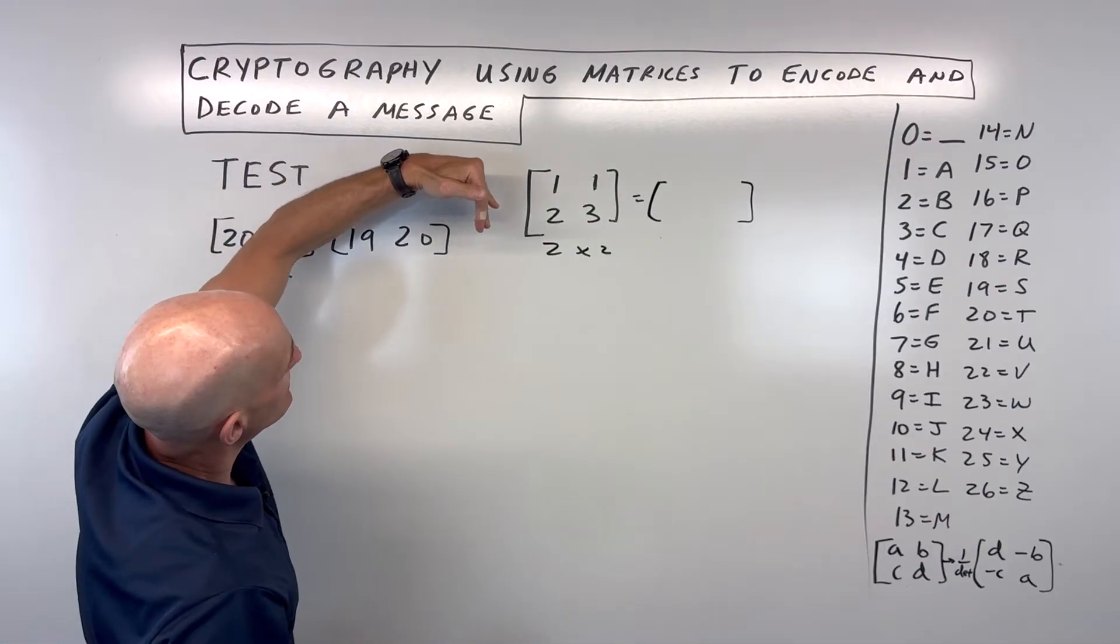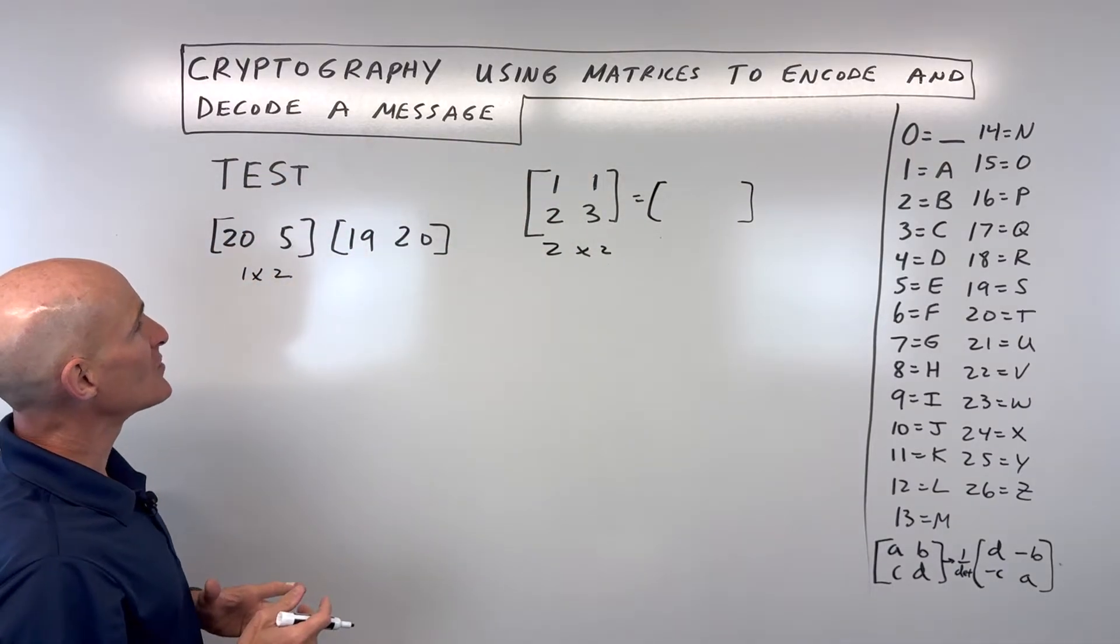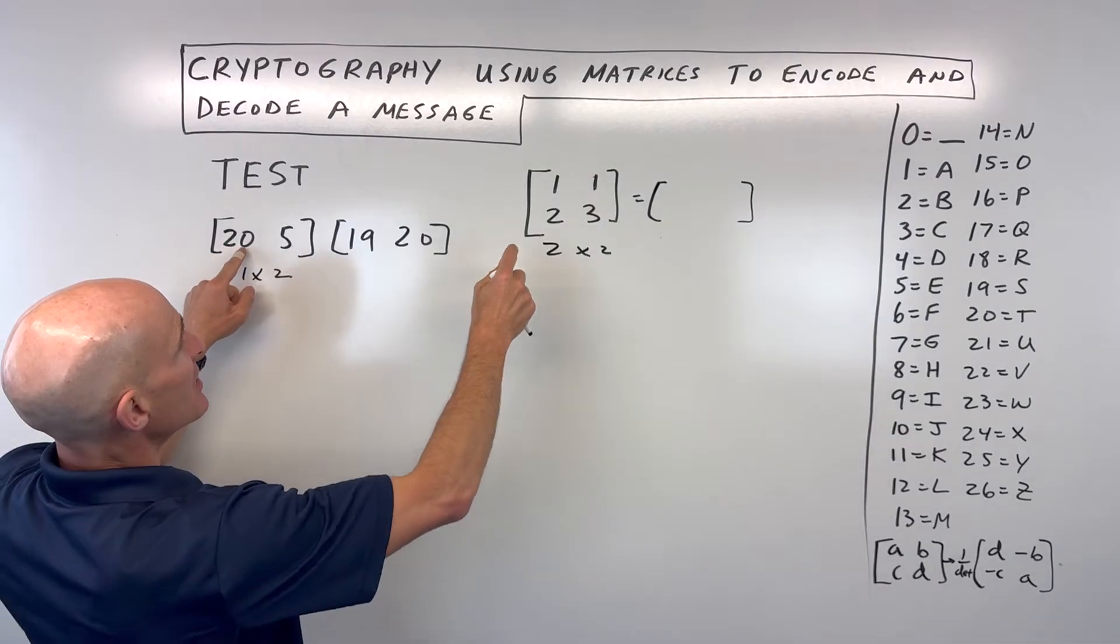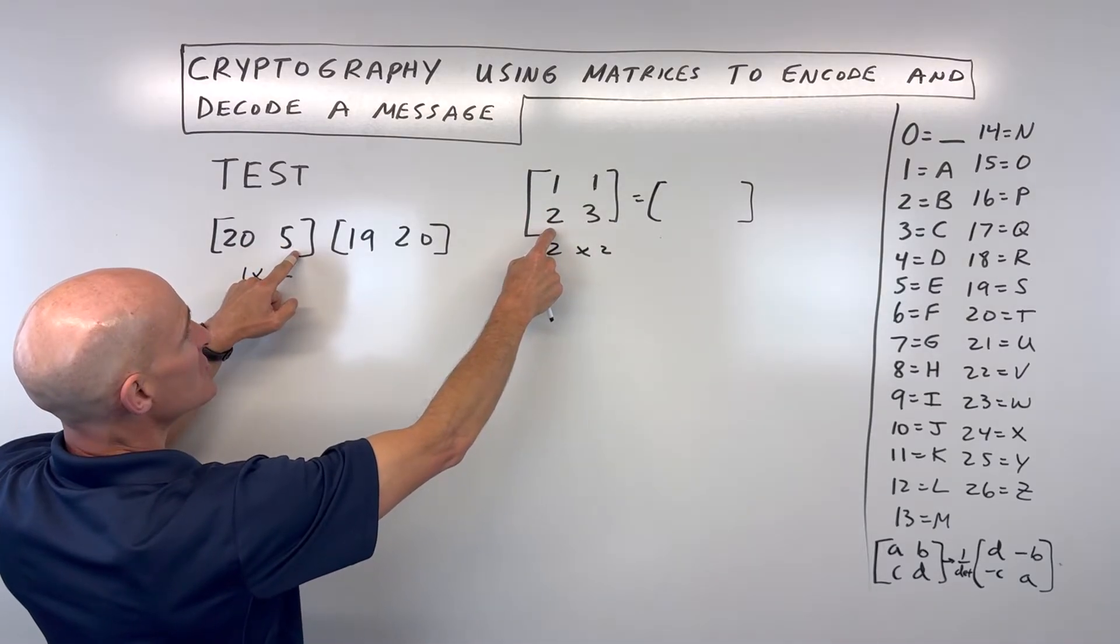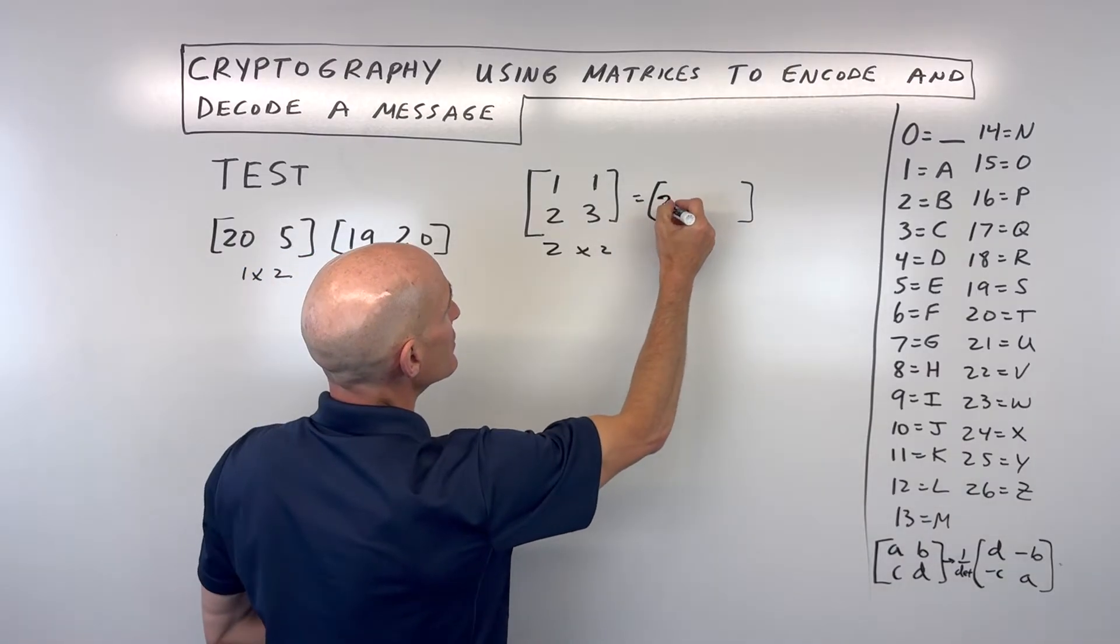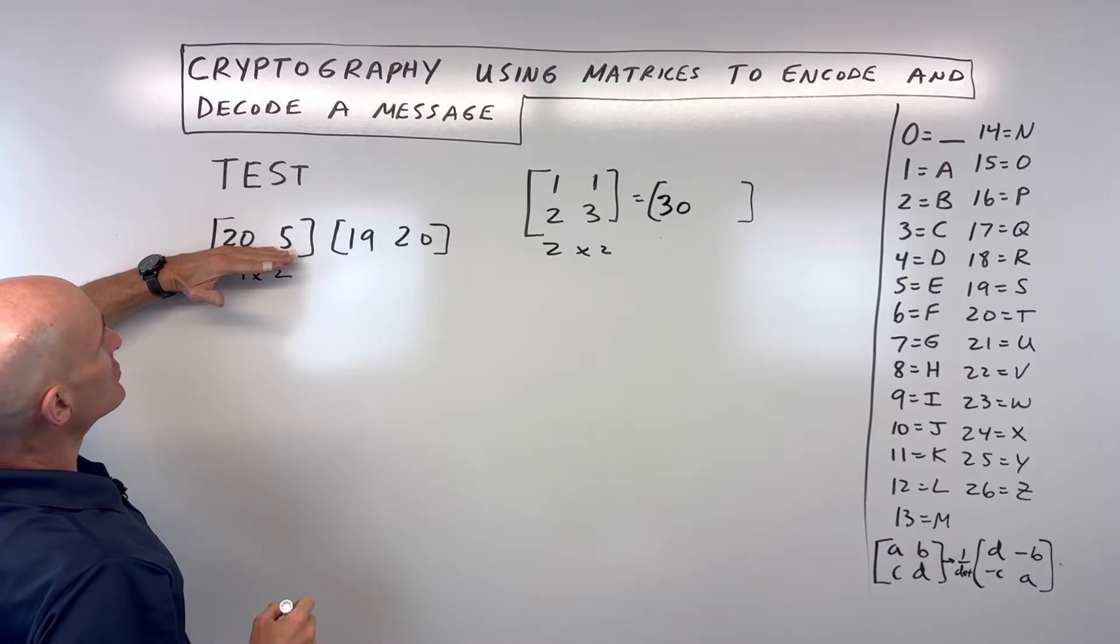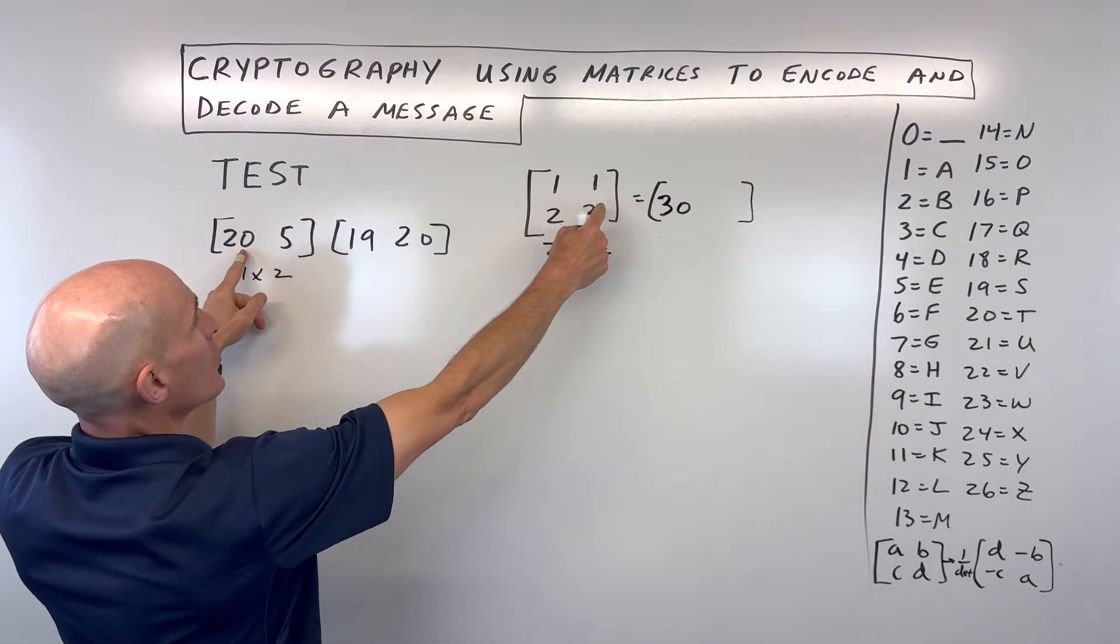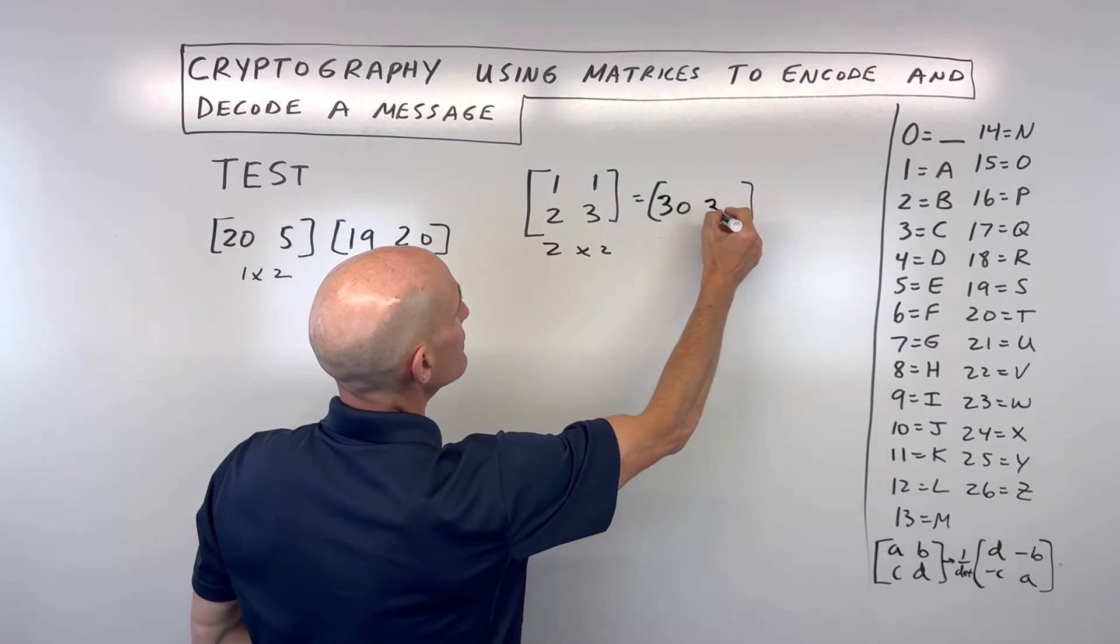Let's go ahead and do that. We're going to take this row times this column. You probably already know how to multiply matrices, but if not, you can check out one of my videos. So you would take 20 times 1, which is 20, 5 times 2, which is 10. So you're adding 20 and 10 together, which gives us 30. Now if we take this 20 and 5 times the second column, we've got 20 times 1 is 20, 5 times 3 is 15. If we add 20 and 15 together, we get 35.